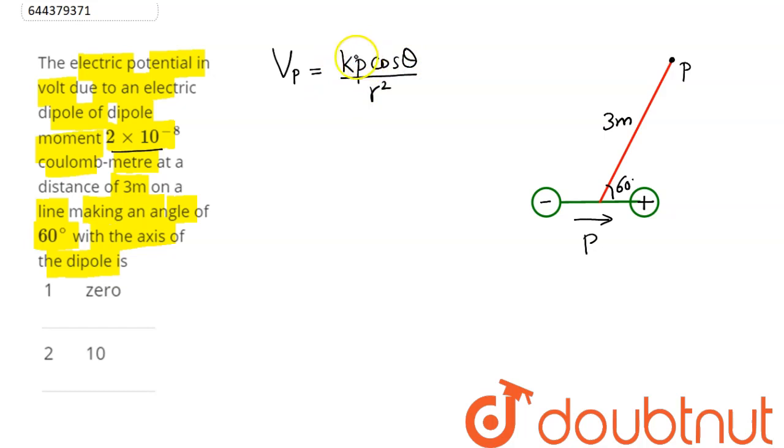where k is Coulomb constant, p is dipole moment, theta is the angle made by this r with the dipole moment. Now here this theta is 60 degree and r is the distance of the point from this center of the dipole